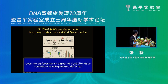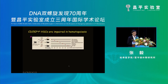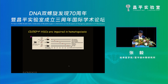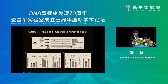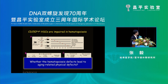The important question is: does the differentiation defect of CD150-high HSCs contribute to aging-related defects? To address this, from the same 24-month-old mice we divided their HSCs into three groups — CD150-low, high, and unsorted mixed — and transplanted into recipient mice. After half a year we checked bone marrow, peripheral blood, and physical tests. As the CD150-high population increases, B cells decrease and myeloid cells increase — similar to older people. Red blood cell count and hemoglobin also decrease as CD150-high level increases.